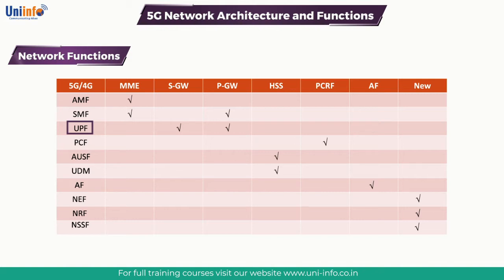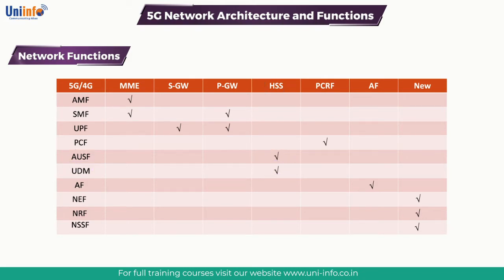Subscriber authentication during registration or re-registration with 5G is managed by the Authentication Server Function (AUSF), which obtains authentication vectors from the UDM. Together they represent the functionality of HSS in 4G core. Application Function (AF) is the same as the AF in 4G core.